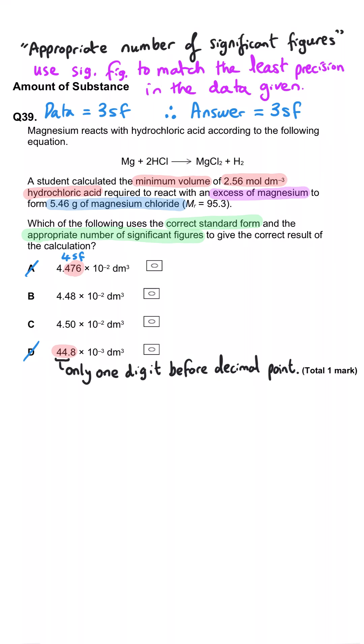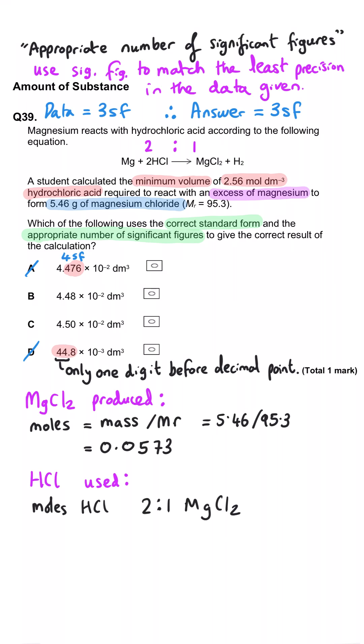We know that we've been given a lot of information about magnesium chloride and we're interested in hydrochloric acid. So we can work out the moles of magnesium chloride that have been produced by doing mass divided by MR. So 5.46 divided by 95.3. And that gets us 0.0573 moles. The ratio of hydrochloric acid to magnesium chloride is two to one. So the moles of HCl will be twice as big. So 0.115 moles.